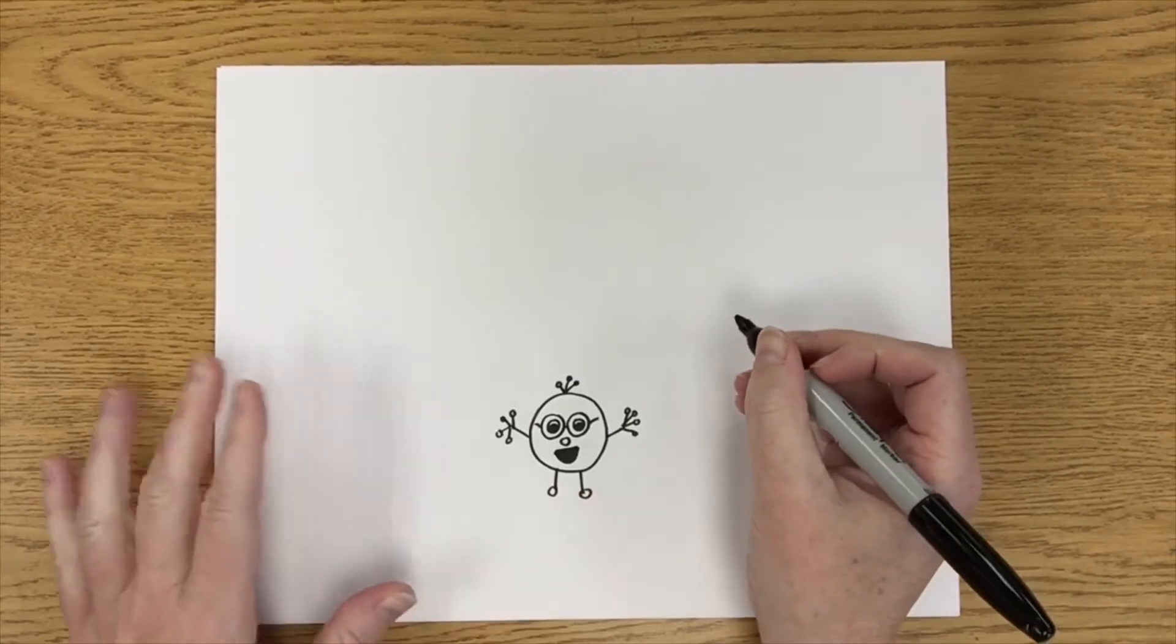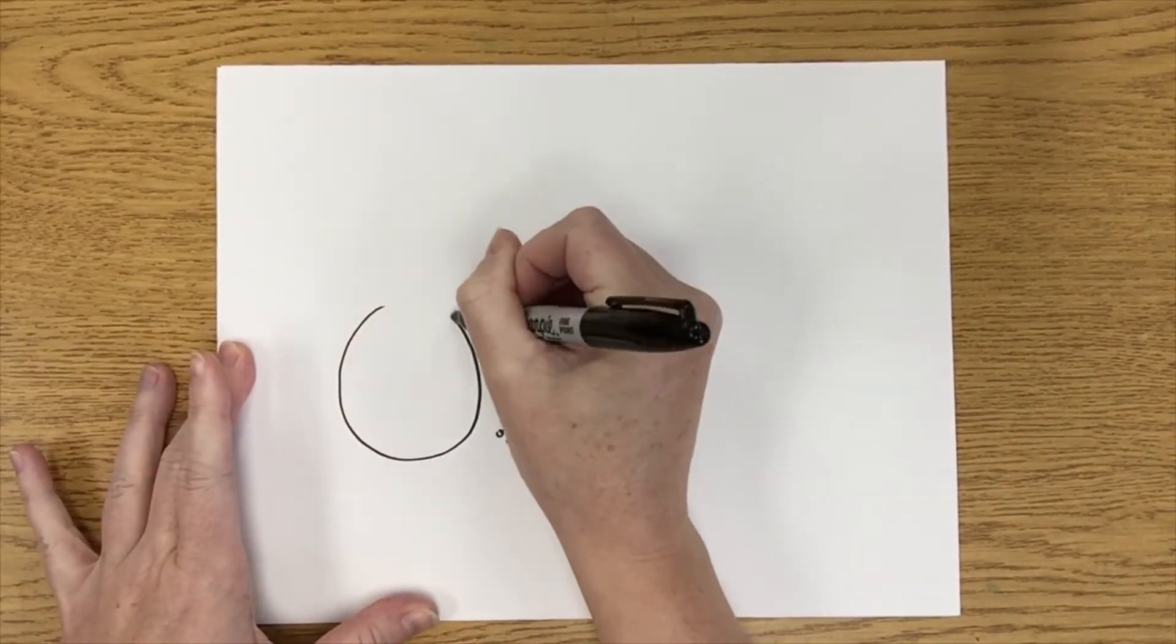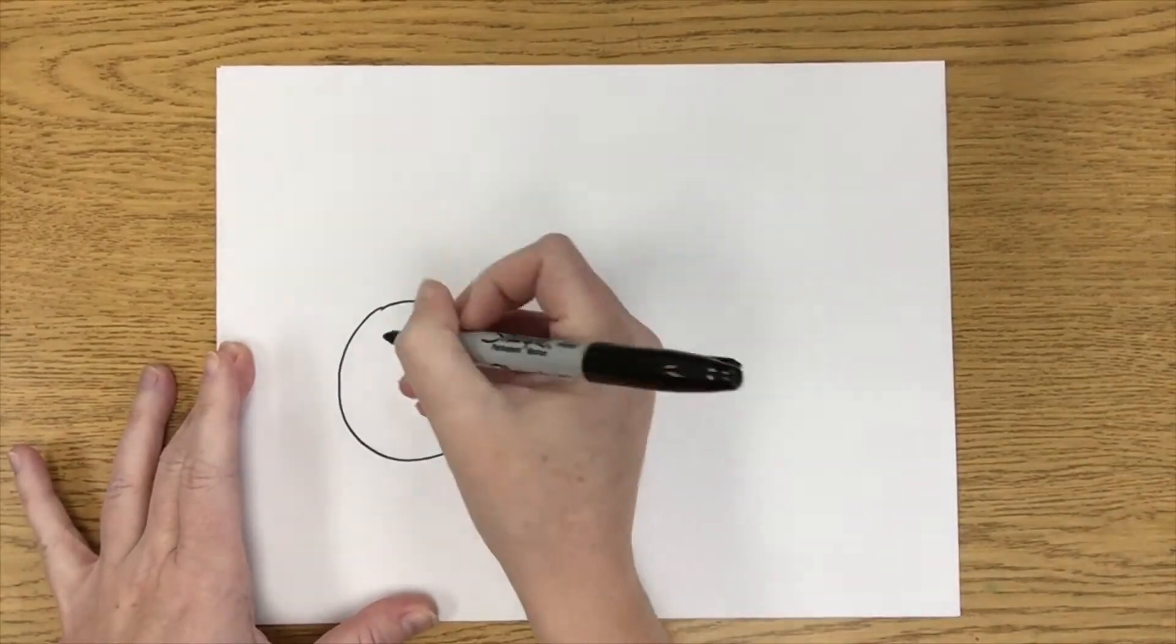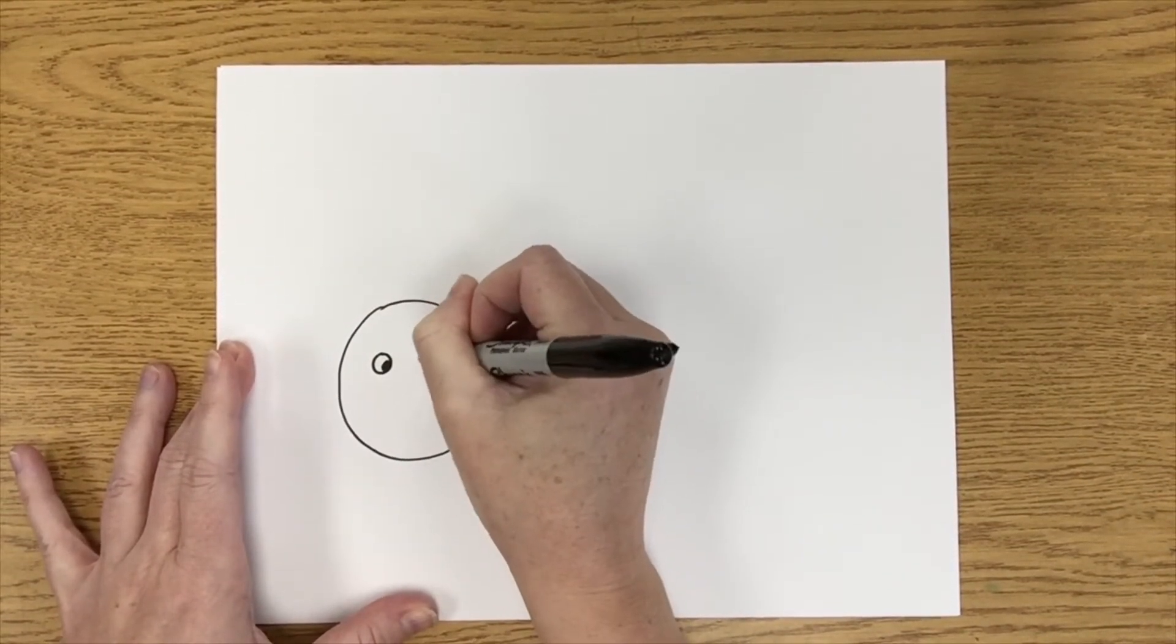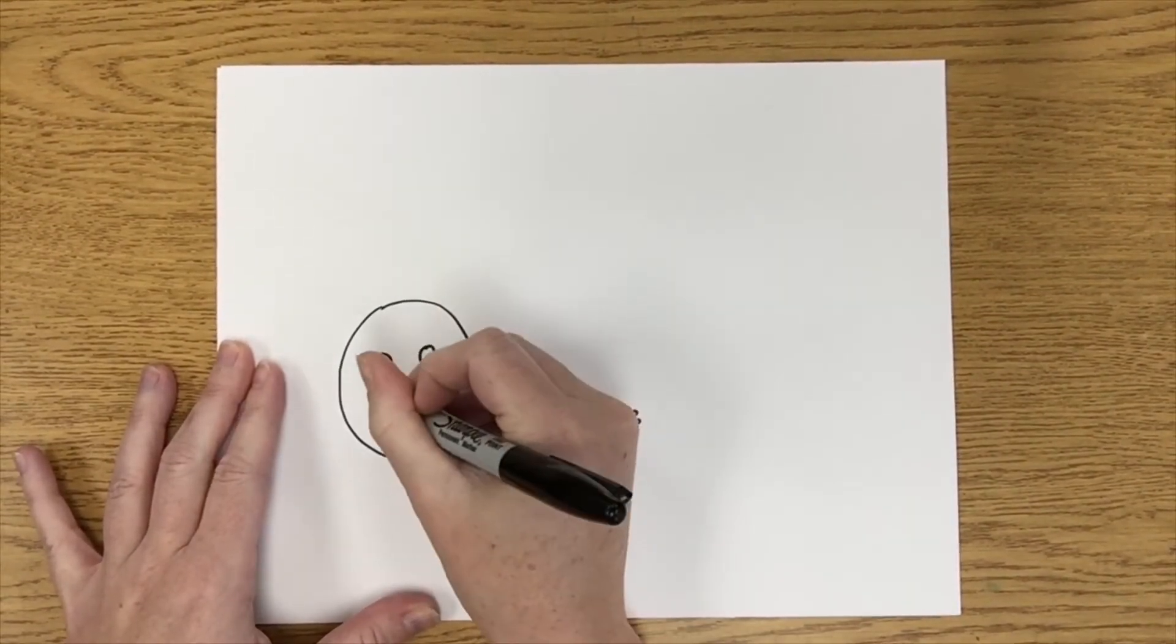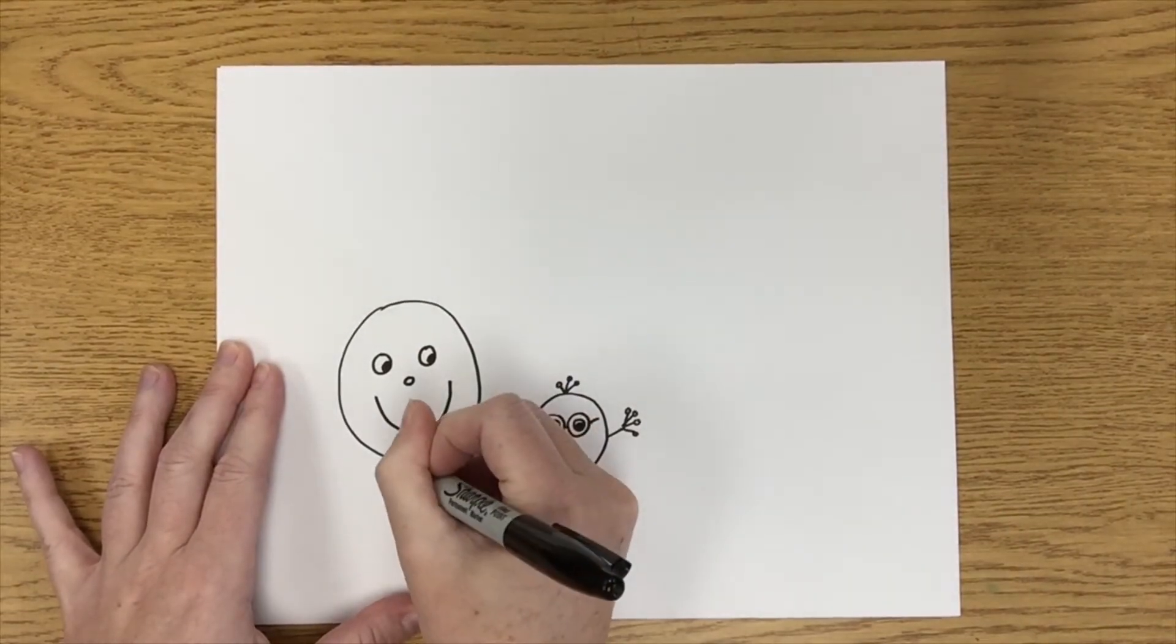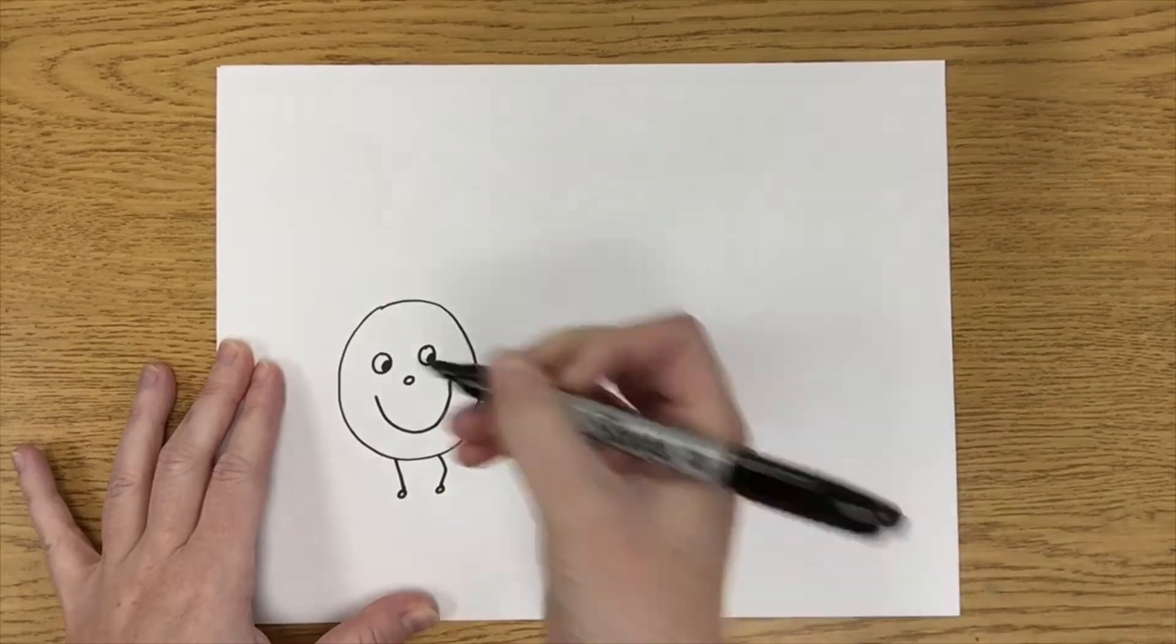So let's draw the big ones now. So bigger circle, this one's going to maybe be a little simpler, looking down at the little guy. All right, and then those little legs.